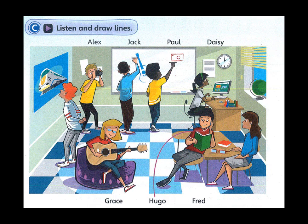2. Look at Alex. Where's she? She's sitting at the table. Is she wearing a blue sweater? Yes, and a grey skirt. She's a really good friend.